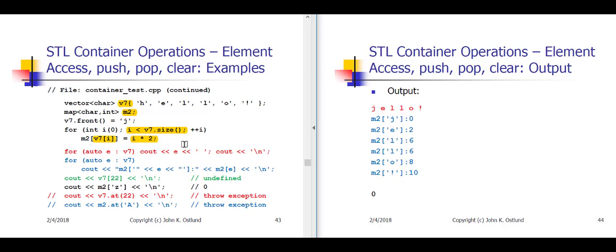The second time through the loop, i's value will be 1. v7[1] is little 'e'. m2['e'] doesn't exist, and consequently a pair with key 'e' and value 0 is created in m2. I get back a reference to the value part whose current value is 0, but I'm assigning 1 times 2, which is 2, in place of that 0. So now I have an entry in m2 with a key of 'e' and a value of 2.